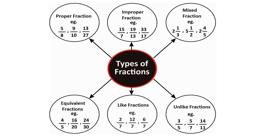The next one is improper fraction. The fraction in which the numerator is greater than the denominator is called an improper fraction. Remember that the value of the improper fraction is always greater than 1. The examples are 15 upon 7, 19 upon 13, and 33 upon 17.